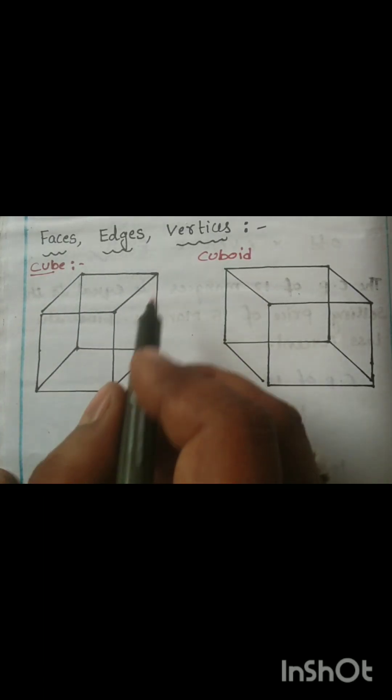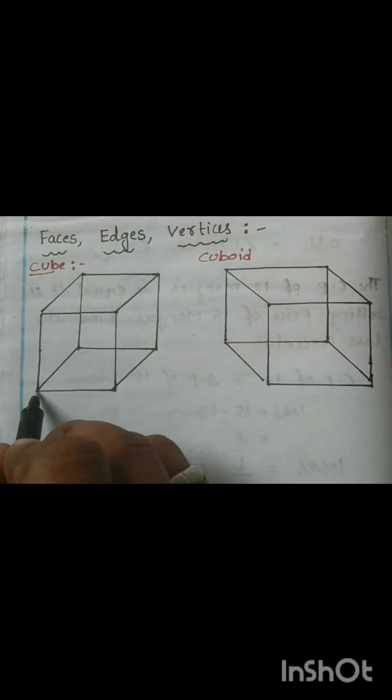Vertices, edges and faces of cube and cuboid. So first let us find vertices. We have totally 1,